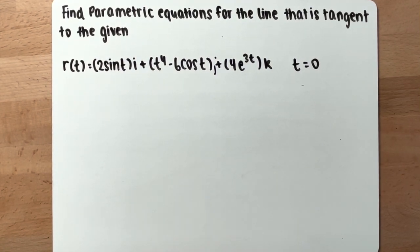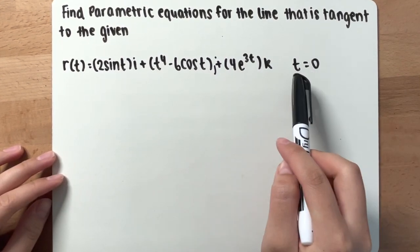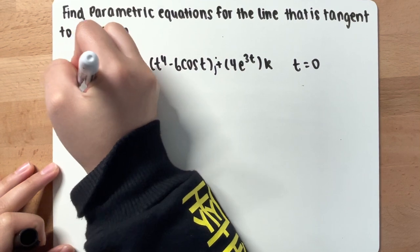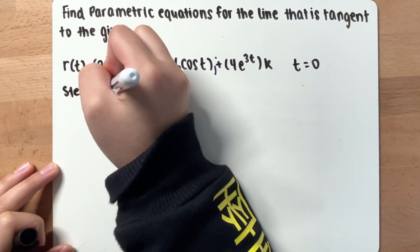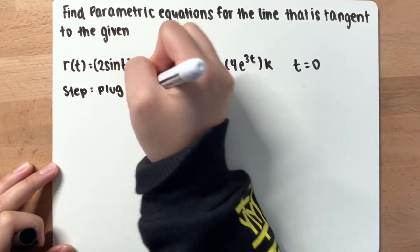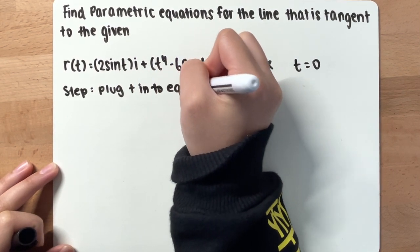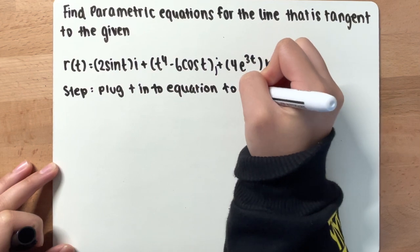Find parametric equations for the line that is tangent to the given. We have a function right here, and then we have our t right here. Step one is you want to plug t into equation to find points.